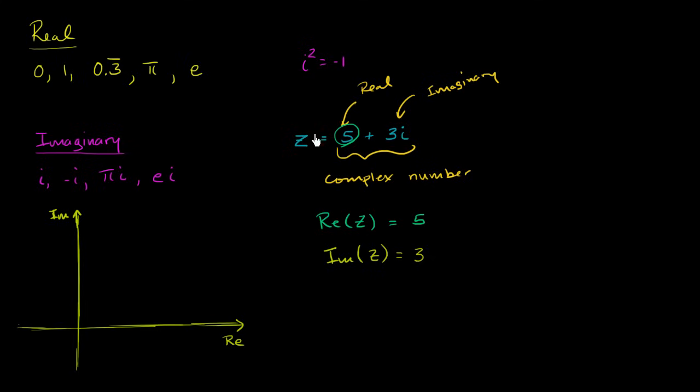So for example, z right over here, which is 5 plus 3i, the real part is 5. So we would go 1, 2, 3, 4, 5. That's 5 right over there. The imaginary part is 3. 1, 2, 3. And so on the complex plane, we would visualize that number right over here. This right over here is how we would visualize z on the complex plane. It's 5, positive 5 in the real direction, positive 3 in the imaginary direction.